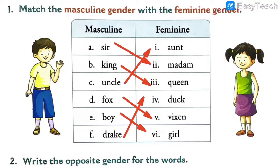I hope students you have also solved this. For those writing in the rough book, I will repeat it one more time: sir–madam, king–queen, uncle–aunt, fox–vixen, boy–girl, drake–duck. These are all the masculines matched with their feminine genders. I hope you have noted down these answers in your rough books.